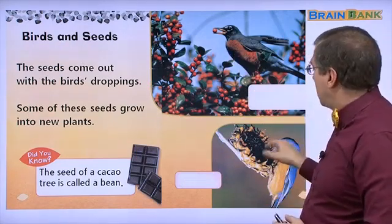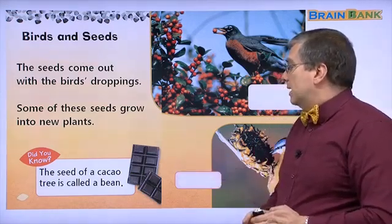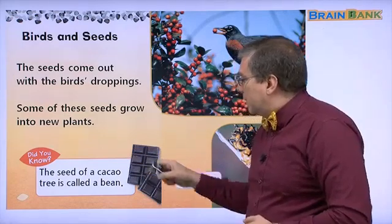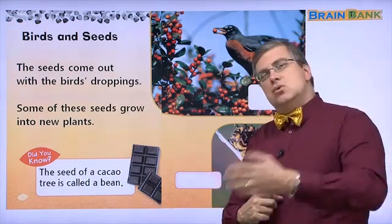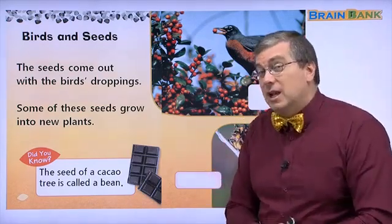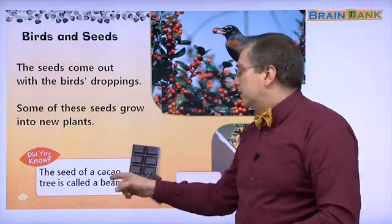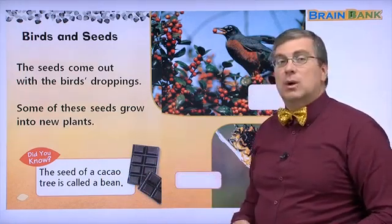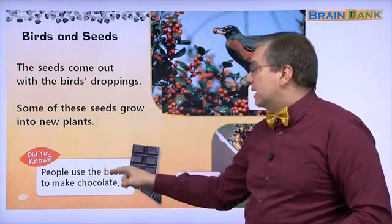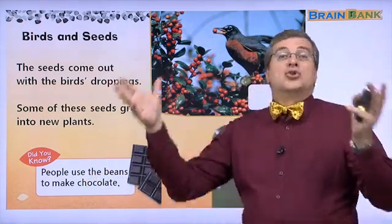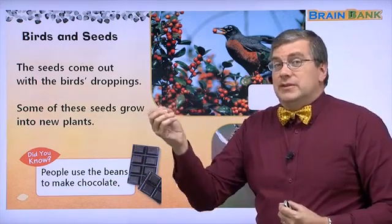They're in the fruit, or birds eat the seeds directly. Did you know about this? This looks like a chocolate bar. Do you know where chocolate comes from? The seed of a cacao tree is called a bean, and that's where chocolate comes from. People use the beans to make chocolate. A cacao tree, probably in South America, has beans that grow on it.